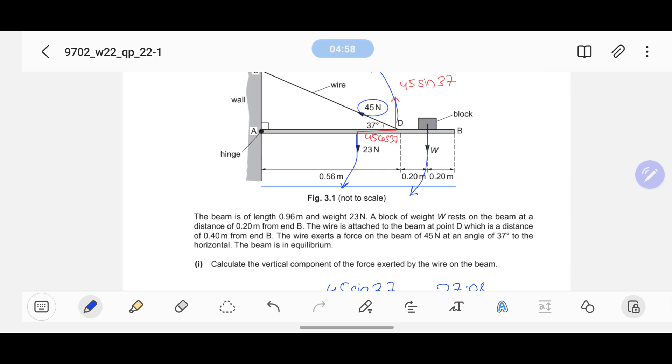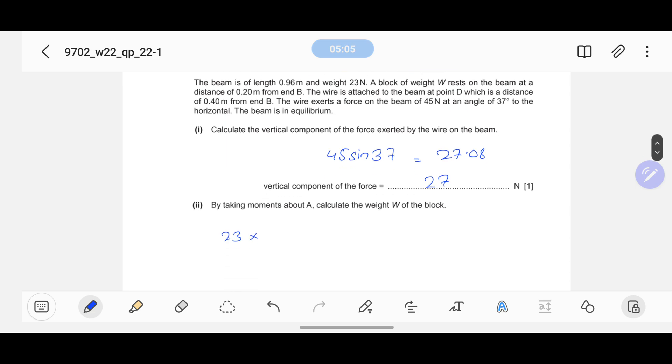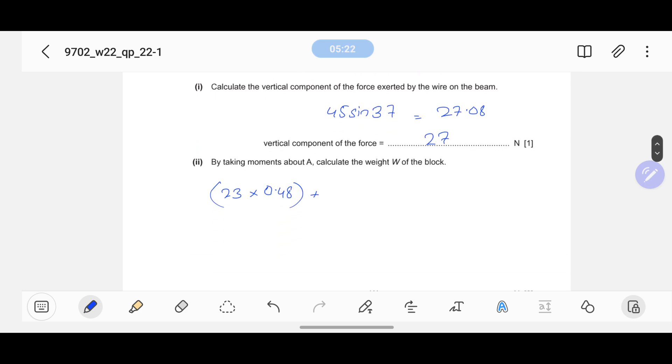Another clockwise movement: W has a length of 0.56 plus 0.2, that makes 0.76. So I can write W times 0.76 equals to - because this was clockwise movement and this is anti-clockwise movement.